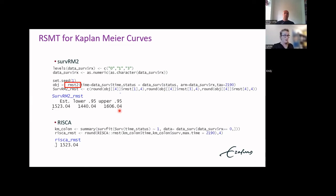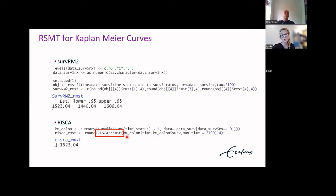For the RISCA package, it uses a survfit object as input using the time and status from the colon dataset, restricted to the observational arm. I estimated restricted mean survival time using the rmst function in the RISCA package, which requires as input the time from the survfit object and the survival outcomes, plus the time to which estimates are restricted. The result is the same point estimate.